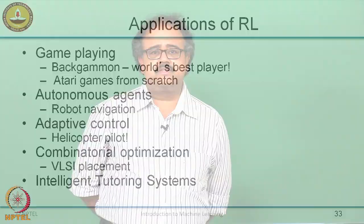More recently, reinforcement learning agents have been trained to play Atari video games from scratch. The input to the system was pixels from the screen and the output was joystick controls. In autonomous agents like robots, reinforcement learning is almost always the learning algorithm of choice. One very prominent success story is the helicopter pilot trained by Andrew Ng at Berkeley and later at Stanford, where a reinforcement learning algorithm was trained to fly a helicopter at near-human-level competence. There are also applications in combinatorial optimization and personalization, including intelligent tutoring systems.